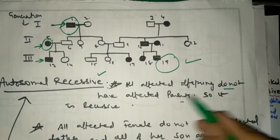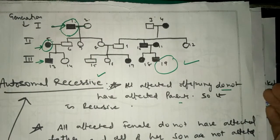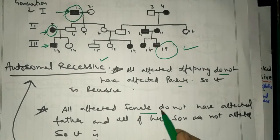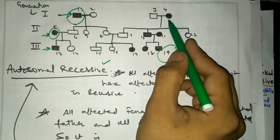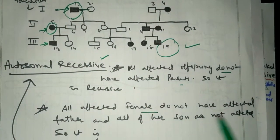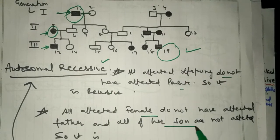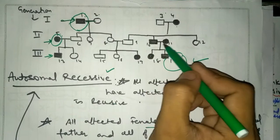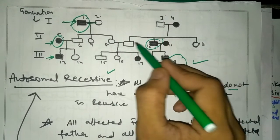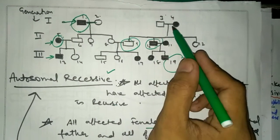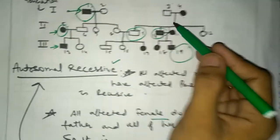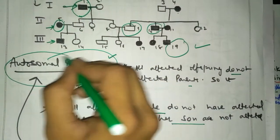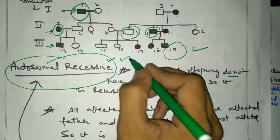Second, all the affected females - you can see the females do not have affected fathers and not all of their sons are affected. This is the female and this is the progeny. This son is affected and this is unaffected. If all were affected, it would be dominant. No, all are not affected, so it can be concluded as autosomal recessive inheritance.